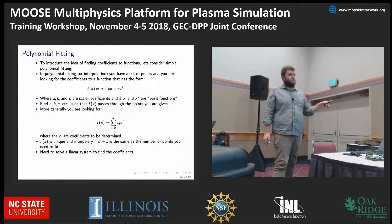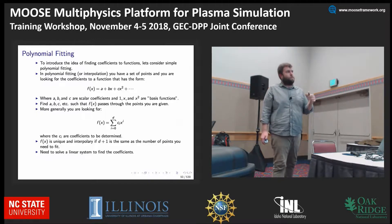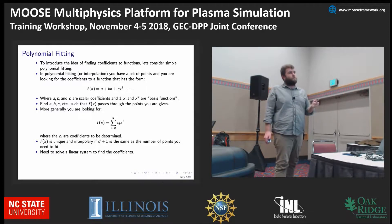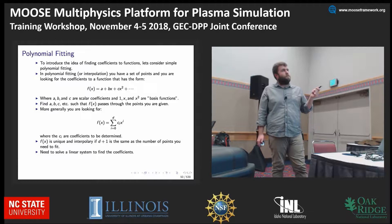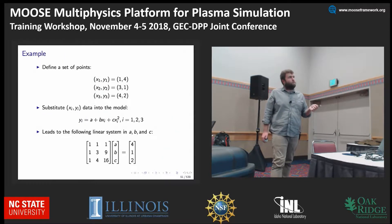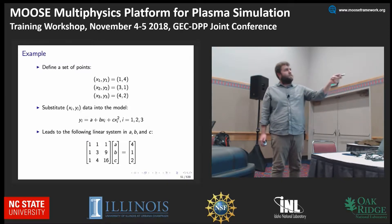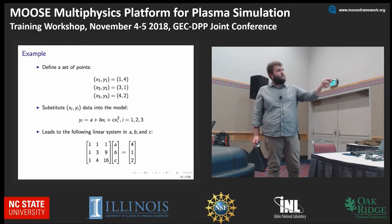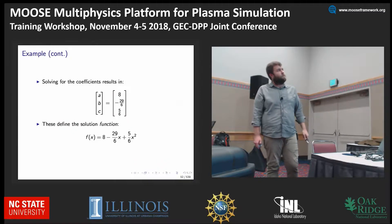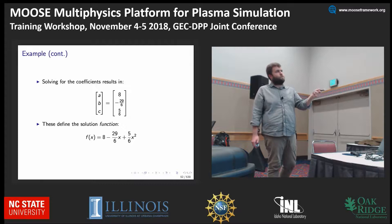All we're doing in Moose is solving a linear system to find the coefficients. Your basis function set: we have a set of points — (1,4), (3,1), and (4,2). We substitute that data into a linear system and then solve for a, b, and c. Then we have our final solution function.